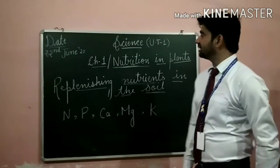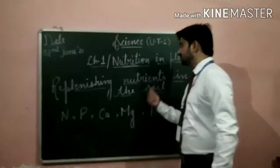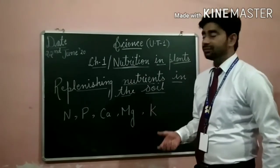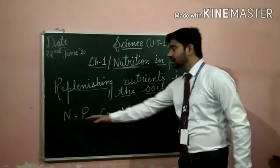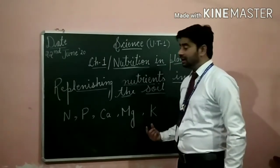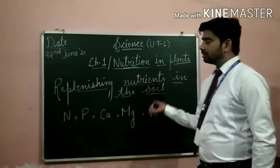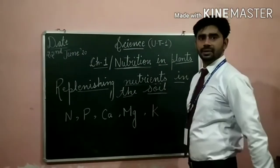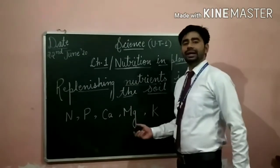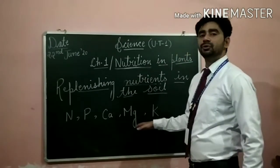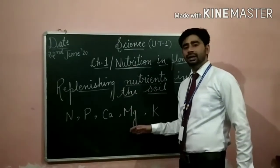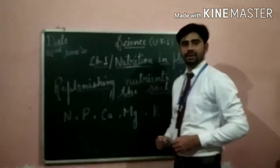Our last topic in this chapter is replenishing the nutrients in the soil. Plants require various types of nutrients — these are nitrogen, phosphorus, calcium, magnesium, and potassium. These nutrients are provided to the plants from the soil. Slowly, these nutrients in the soil keep on decreasing, so we have to add fertilizers in the soil to enrich its fertility.